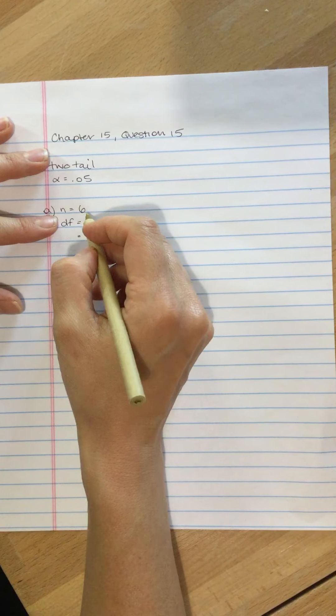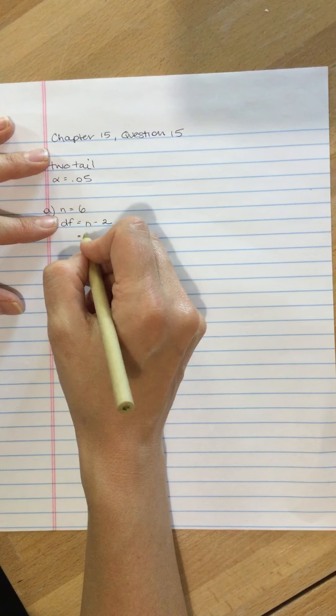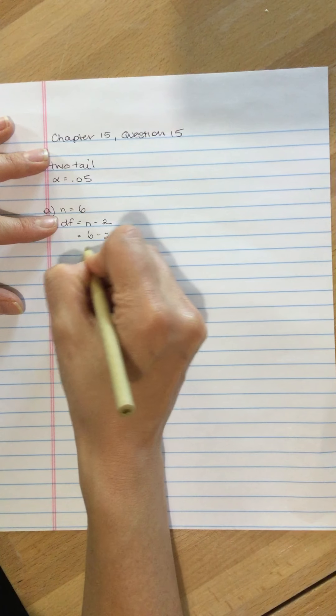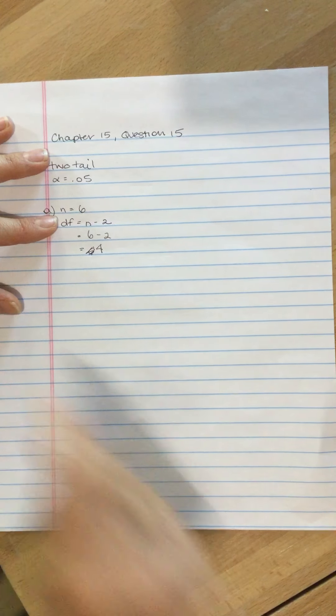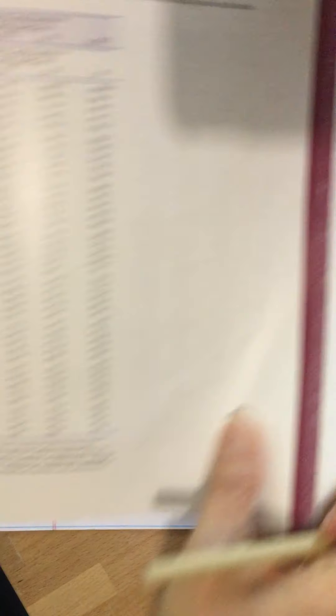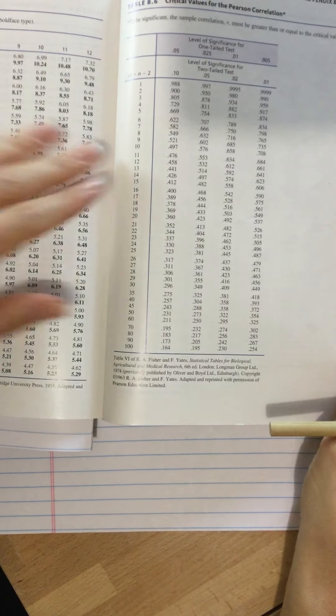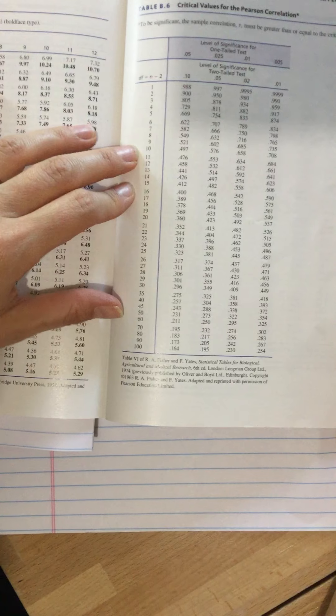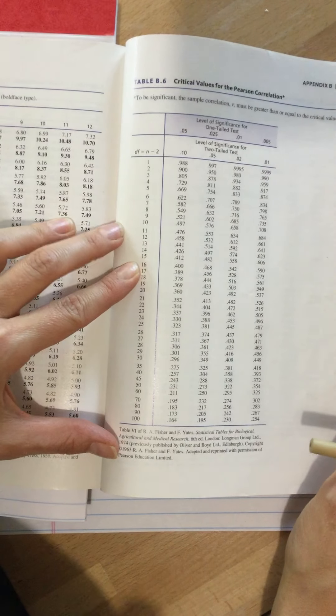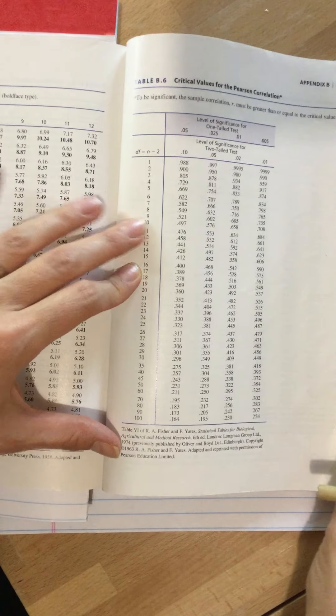Question A, the n is 6, so 6 minus 2, our degrees of freedom is 4. From there, we go to the back of the book. I'm going to pull that over. We're going to get practice looking at it. The critical values for the Pearson correlation. If you're using a different book, it might not be table B6, but this is the table that we want.